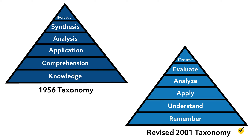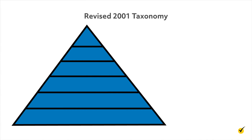Bloom's taxonomy was revised in 2001. There are still six levels of cognitive processes in the hierarchy, but they have been renamed using verbs rather than nouns. Additionally, create is now the highest level on the taxonomy, replacing evaluation. Within each level of cognition, there are specific action verbs listed. These verbs can guide teachers when creating learning objectives.